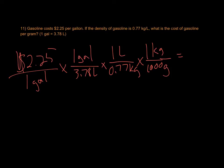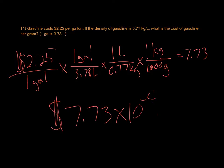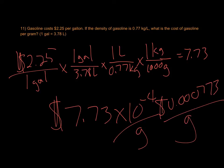So what I end up with when I do this out is 7.73 dollars times 10 to the negative fourth per gram. Or if you wrote that out, it would be 0.000773 dollars per gram. This measurement does have two significant figures, so you could make a case for rounding to 7.7 rather than 7.73.